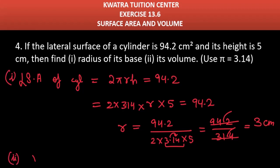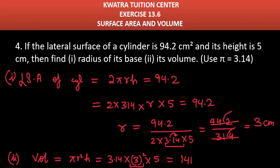In the second part, we need to find the volume. Volume of a cylinder is basically πr²h. The value of π is 3.14, r² is 3² which is 9, and h is 5. So 3.14 × 9 × 5 — that is 3.14 × 45 — and the final answer comes out to be 141.3 cm³.